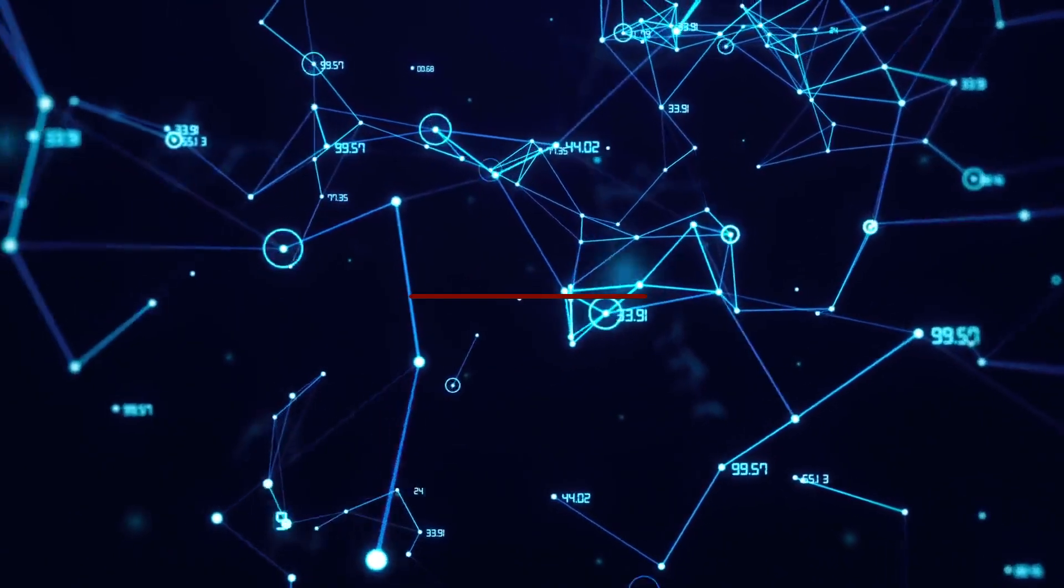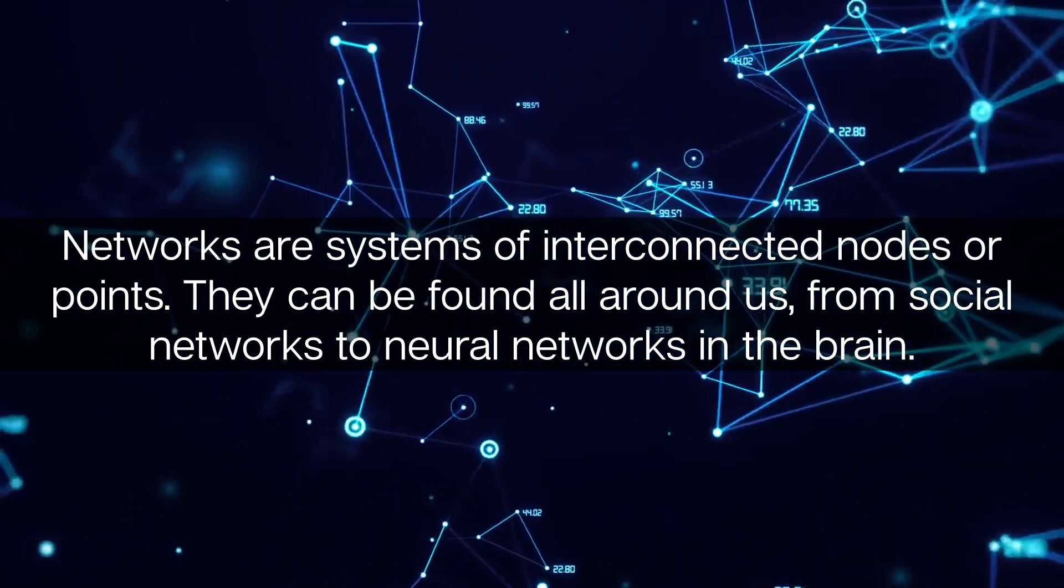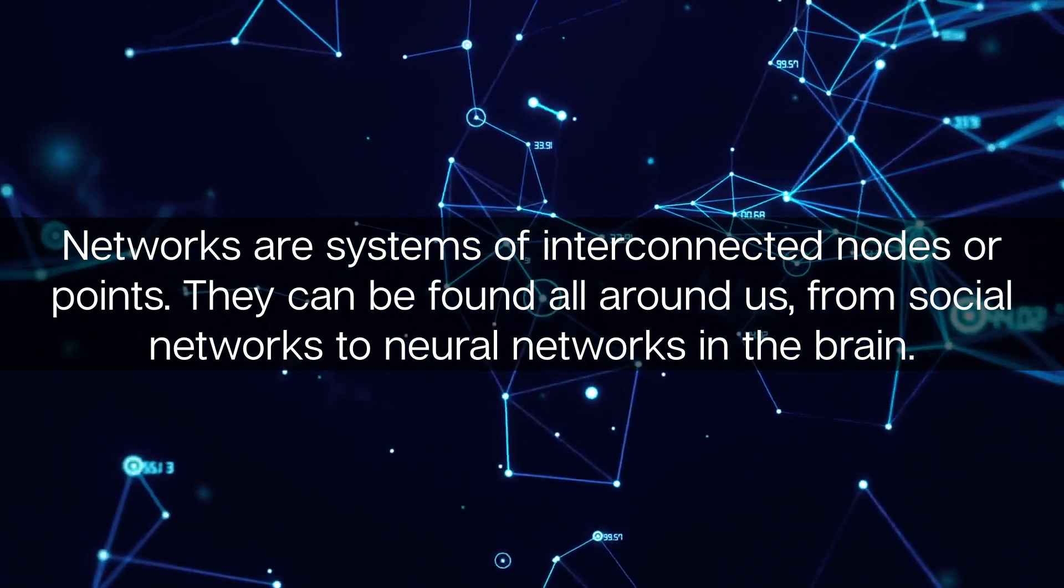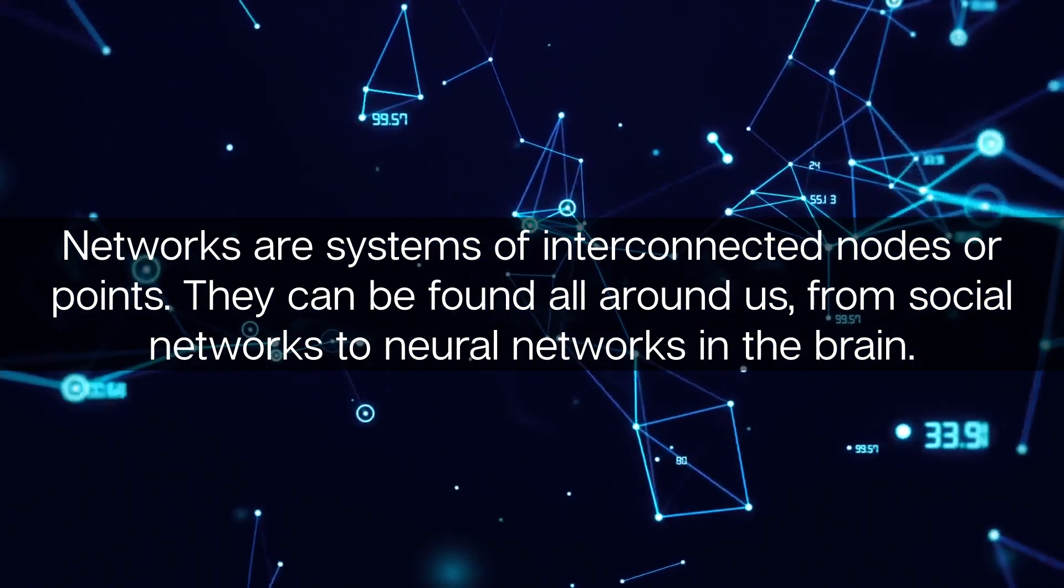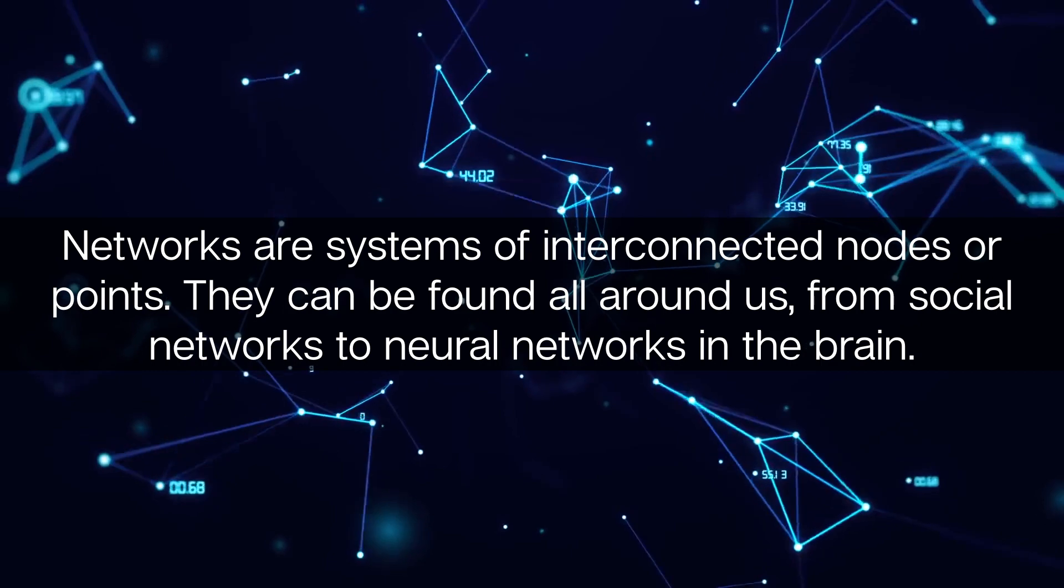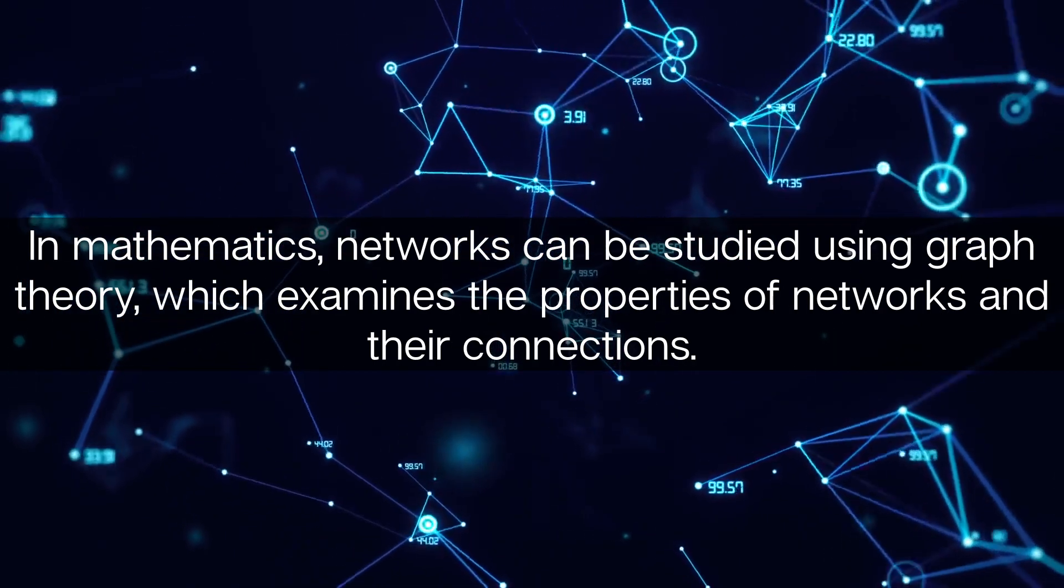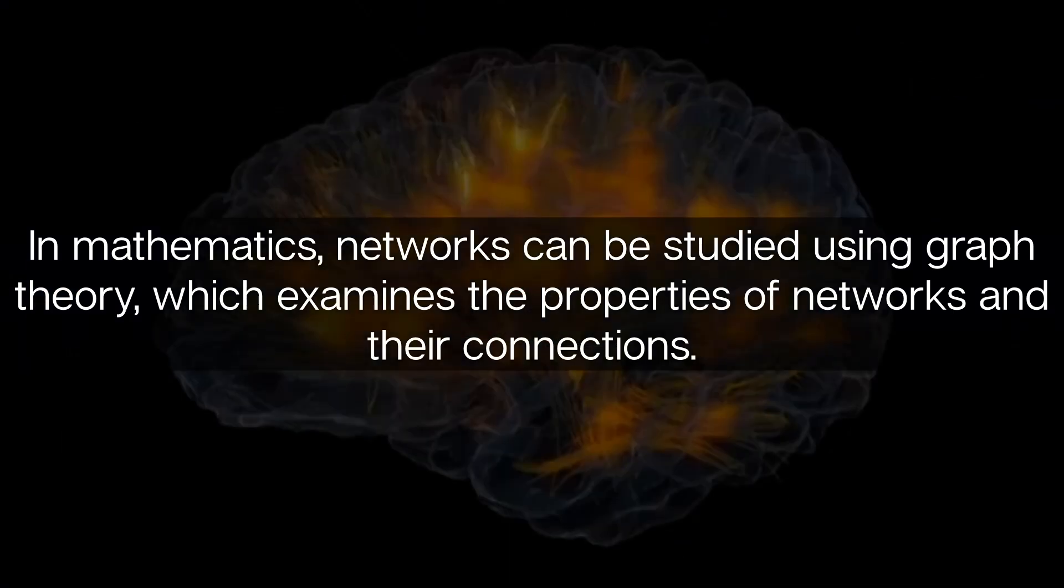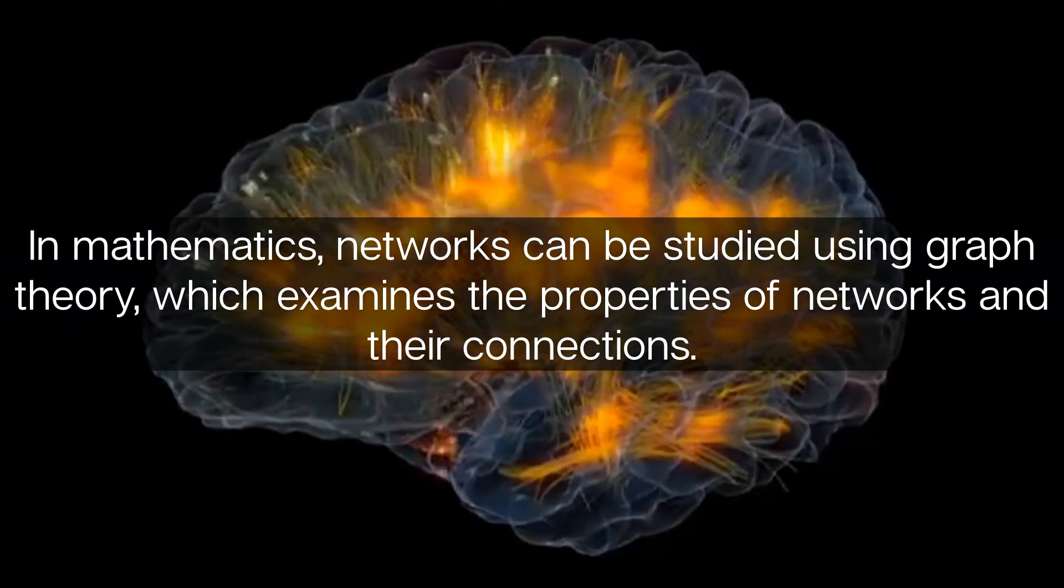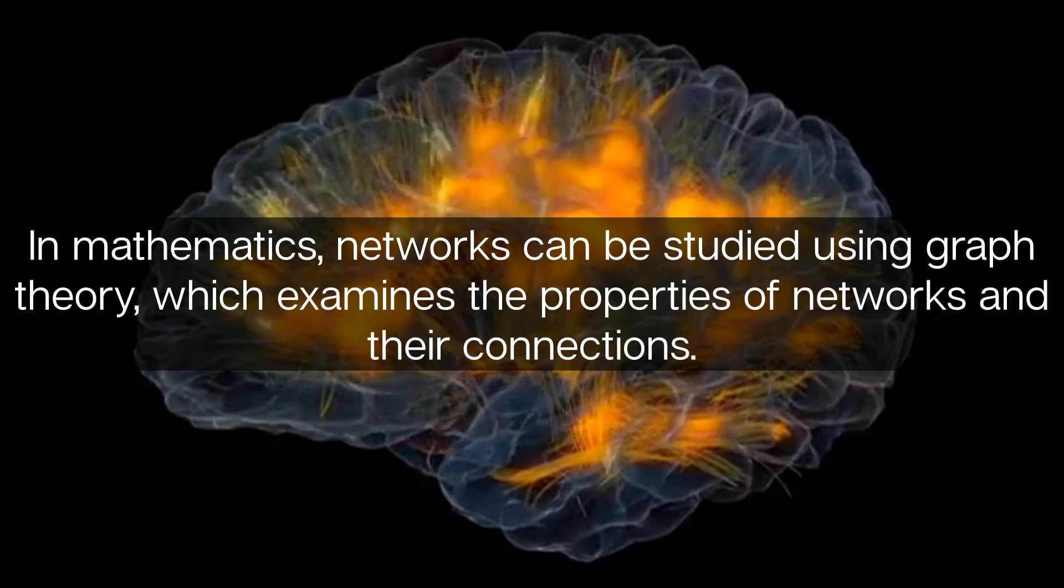In nature, organisms have evolved to optimize their survival and reproduction, leading to some remarkable adaptations. Networks are systems of interconnected nodes or points. They can be found all around us, from social networks to neural networks in the brain.